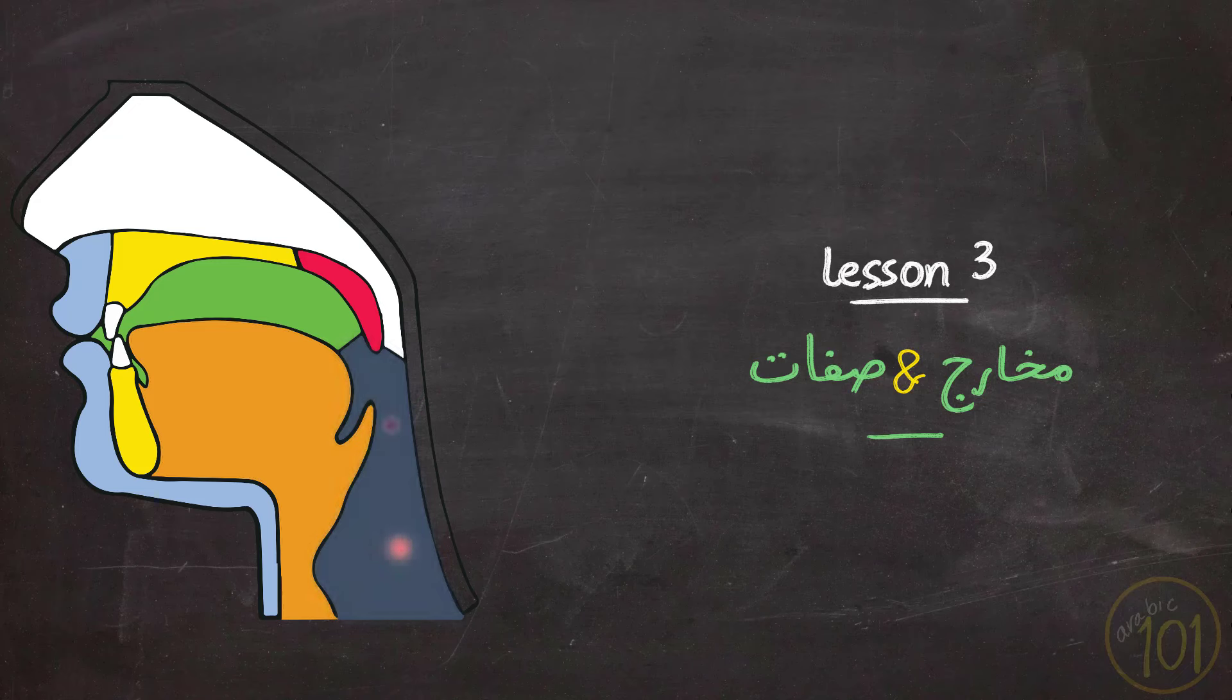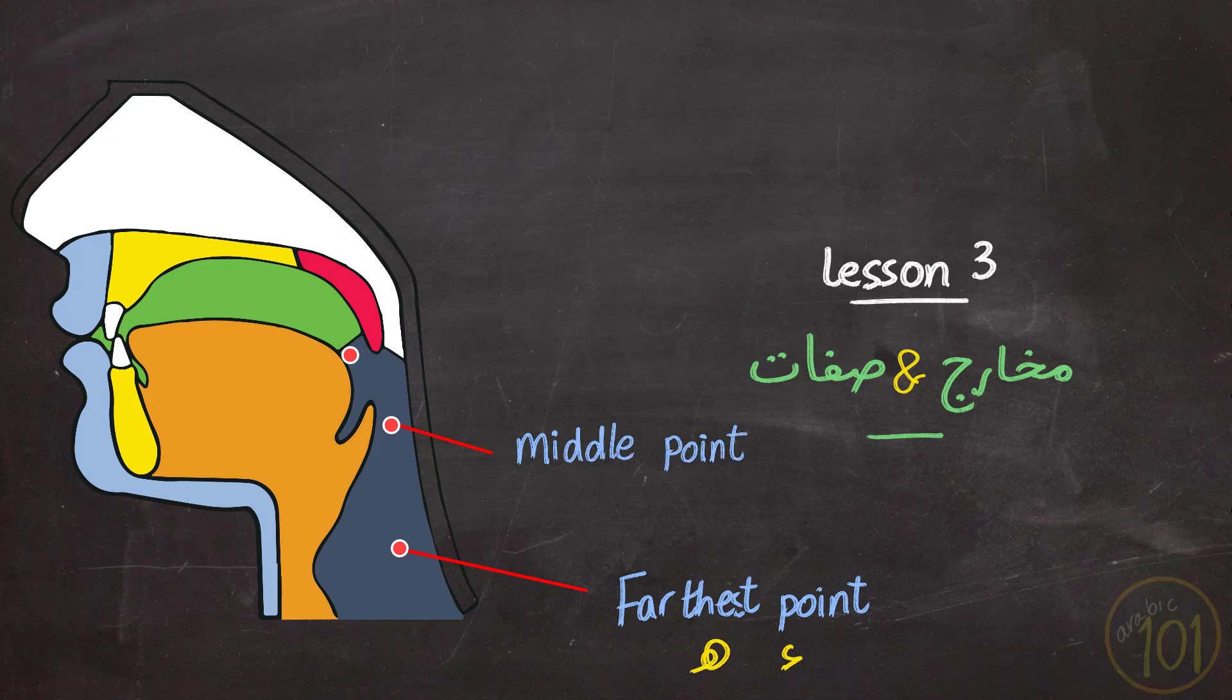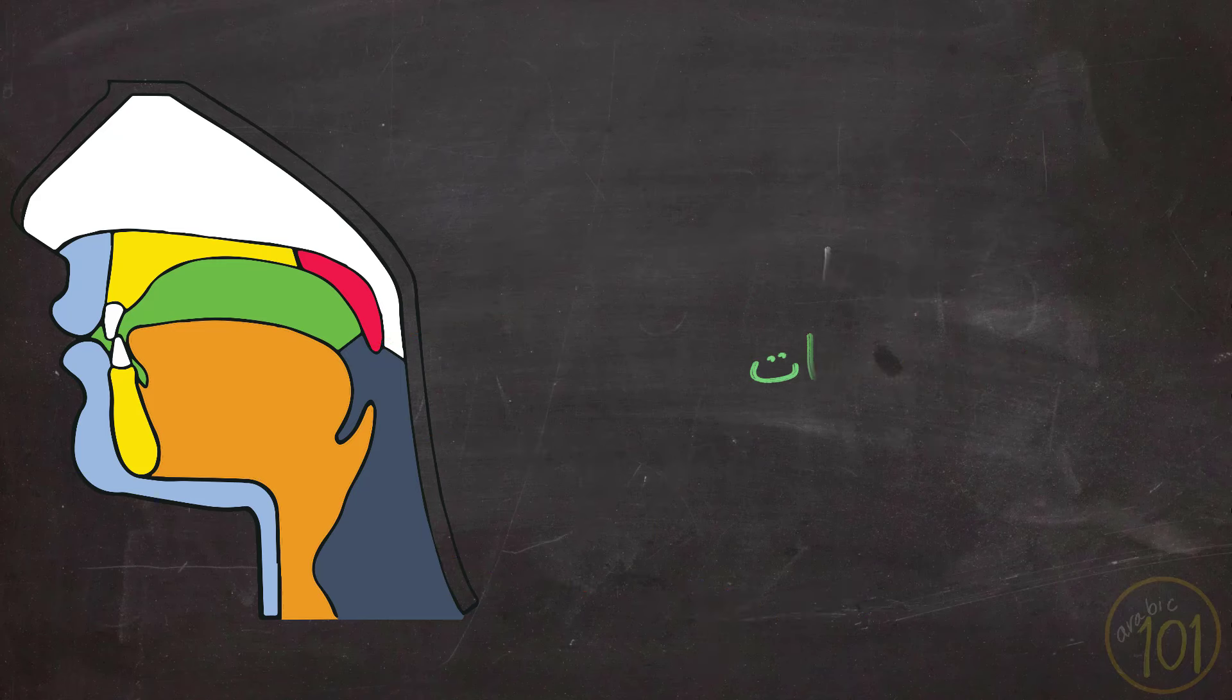The throat has three articulation points. The farthest point, from which come Hamza and Ha. These two were discussed last lesson. Then we have the middle point and the nearest point. Today's main focus is the middle point of articulation. From this area, we pronounce two letters. They are Ha and Ayn. So, let's get started.